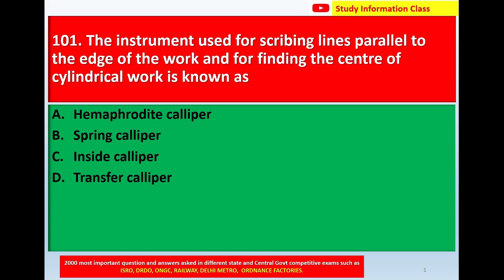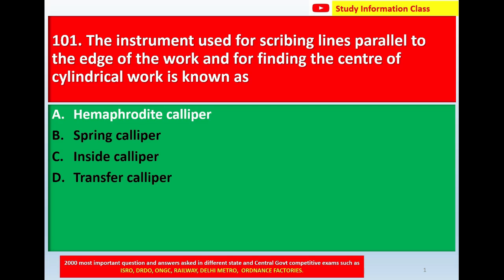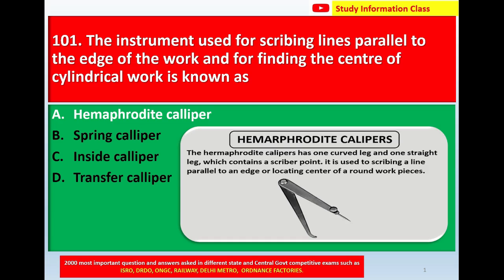Option A: hermaphrodite caliper. Option B: spring caliper. Option C: inside caliper. Option D: transfer caliper. Correct answer is hermaphrodite caliper. This hermaphrodite caliper has one curved leg and one straight leg containing a scribe bar point. It is used to scribe a line parallel to an edge or to locate the center of a round work piece.